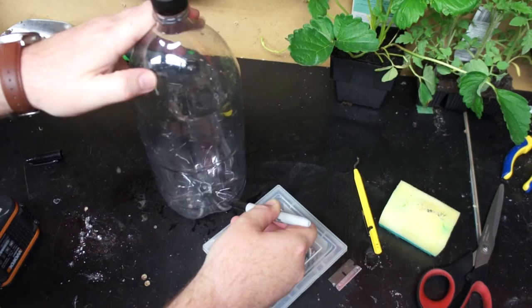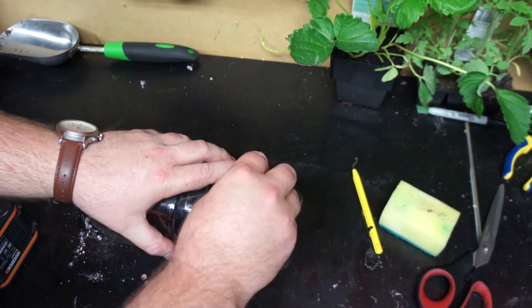I use a block to prop my hand up and then spin the bottle along the pen to make it easier to get an accurate mark.